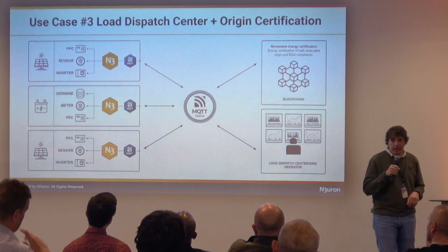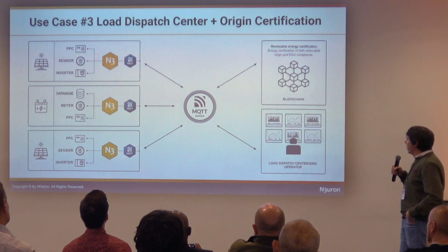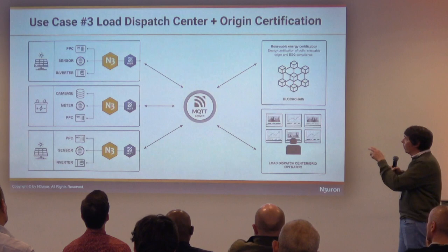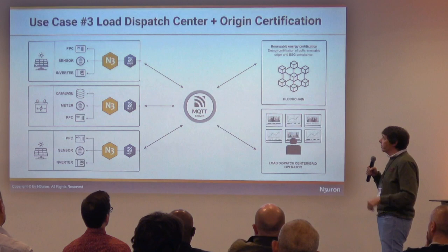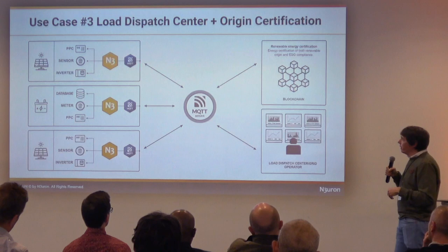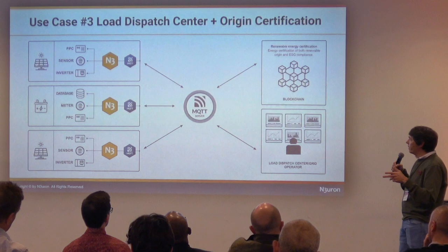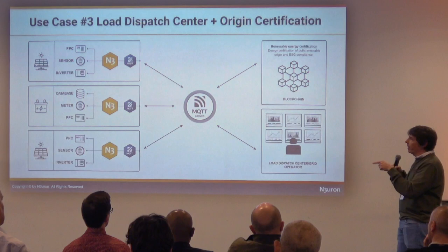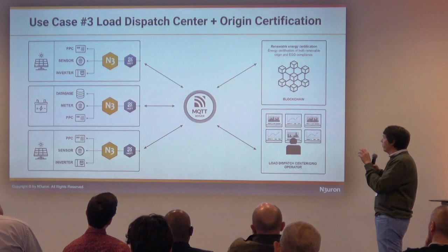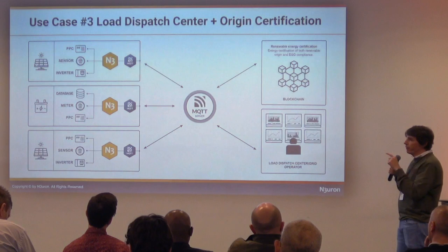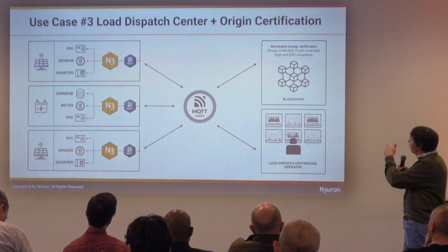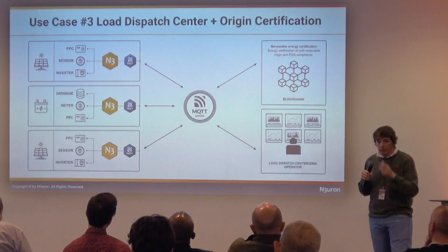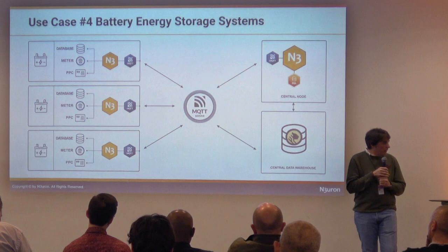More and more companies are starting to use Sparkplug. This third use case is in Spain, where a company acting as a load dispatch center has specified Neuron to be deployed at the edge by all their clients. They connect to power meters to retrieve voltage, active power, reactive power, and the state of the main contactor, and they send curtailments and the reason for the curtailment. They also started providing an additional service to certify the green origin of the energy produced in the plants through a software-as-a-service platform using blockchain that also communicates over MQTT.